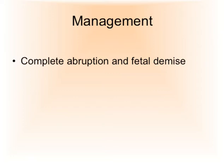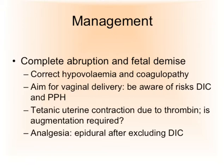For management of a complete abruption combined with fetal demise: we must correct the hypovolemia and possible coagulopathy. We aim in this scenario for vaginal delivery and must be aware of the risk of disseminated intravascular coagulation (DIC) and consequences such as acute tubular necrosis for the kidneys. The uterus is contracted continuously — a titanic uterine contraction — likely the effect of thrombin — and augmentation is usually not required as the uterus is already massively contracted. It is important to offer analgesia; epidural provides perfect analgesia, but we must check that platelets and clotting are still working, otherwise we might contribute to an epidural hematoma.